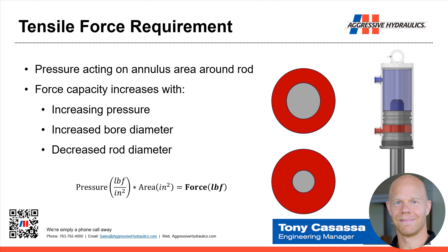If the force is in the tensile direction, the pressure is now acting on the annulus area — the red area highlighted in those two examples. Force capacity increases again with increasing pressure and increasing bore diameter. However, force capacity actually increases with a decreased rod diameter. With a larger rod, we have less red annular area, meaning less surface for the pressure to act on to retract the cylinder.